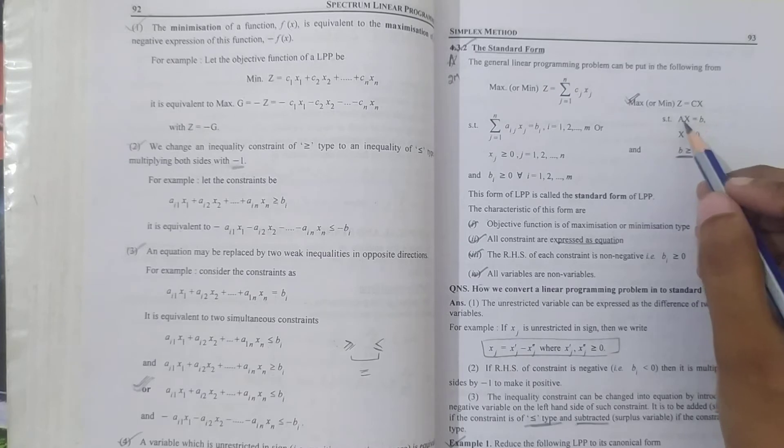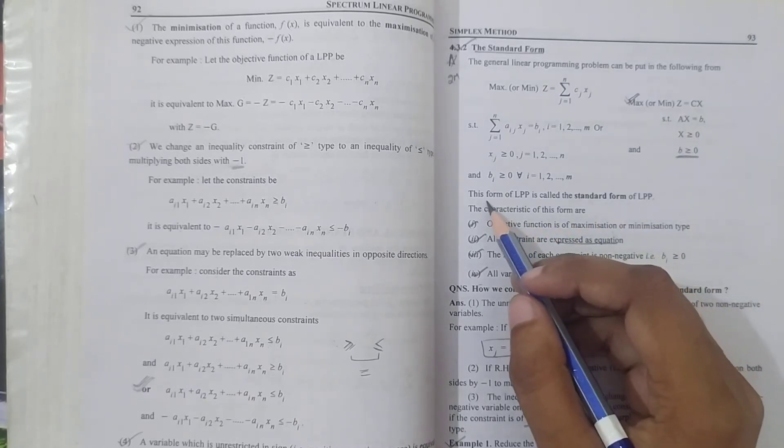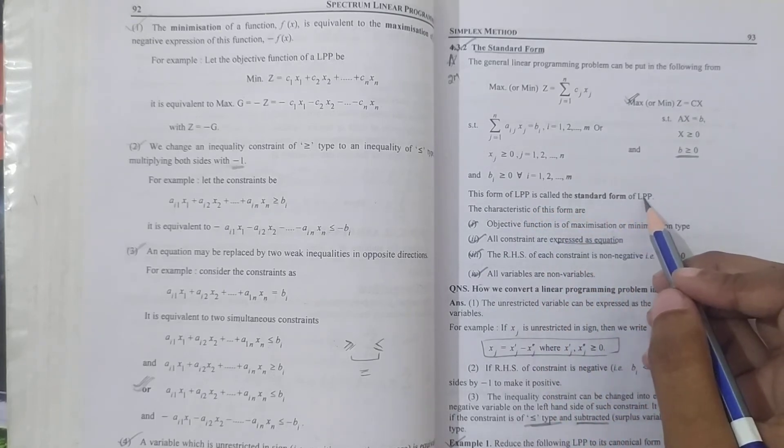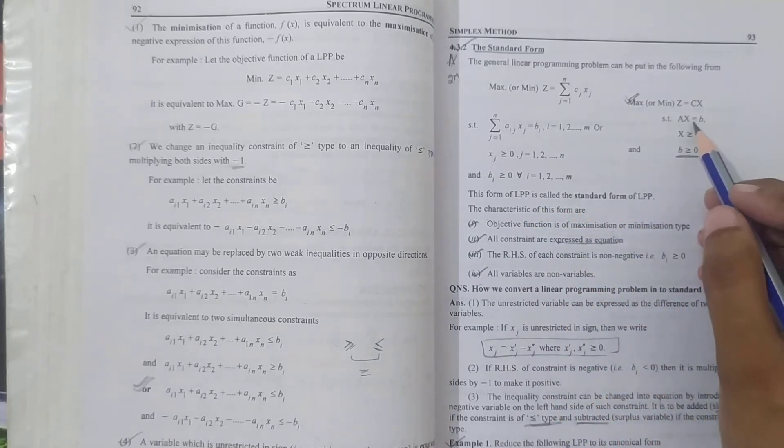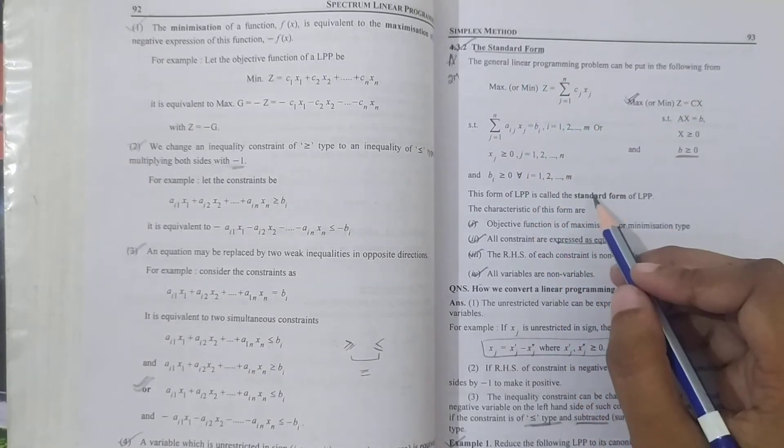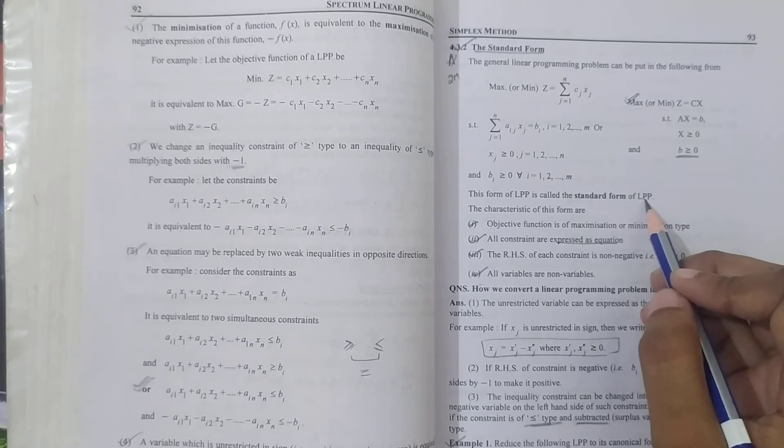Ax equals b where x greater than or equal to 0 and b greater than or equal to 0. This form of the LPP is called the Standard Form of LPP, where our constraints are in equality form.